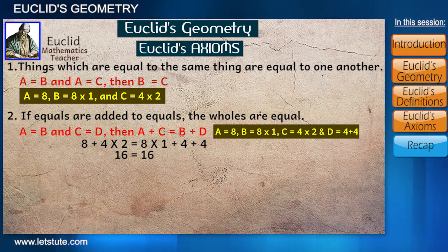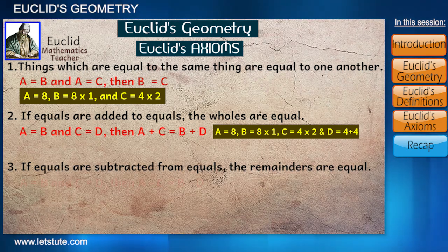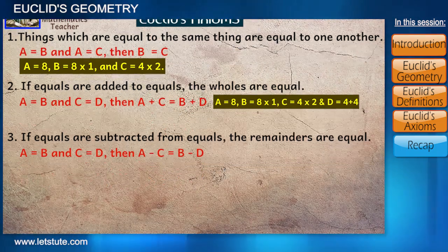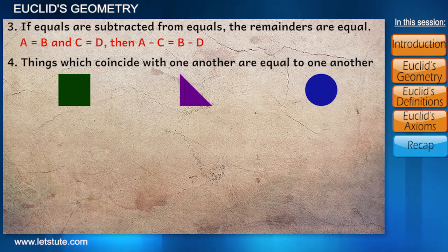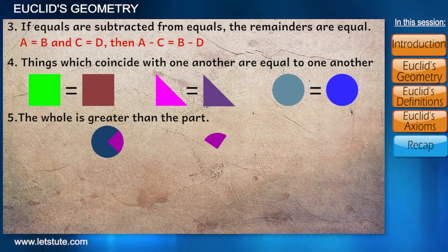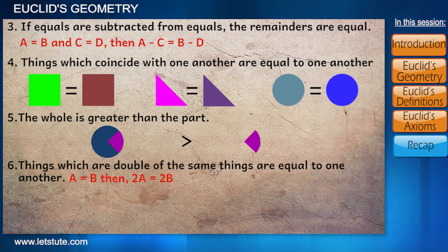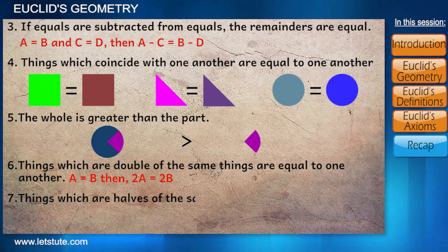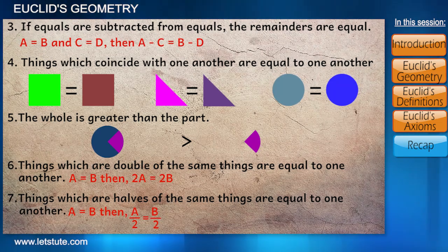The third axiom says: if equals are subtracted from equals, the remainders are equal. That is, if a equals b and c equals d, then a minus c equals b minus d. The fourth axiom: things which coincide with one another are equal to one another. The fifth: the whole is greater than the part. The sixth: things which are double of the same things are equal to one another — if a equals b, then 2a equals 2b. And the last axiom: things which are half of the same things are equal to one another — if a equals b, then a divided by 2 equals b divided by 2.